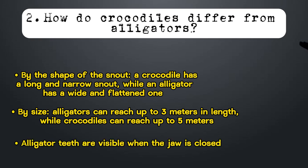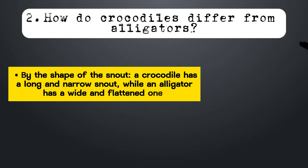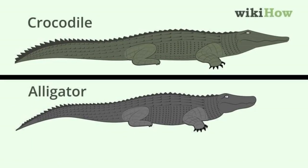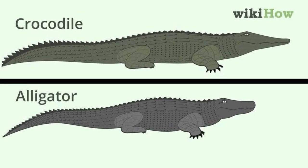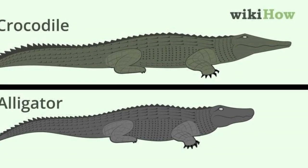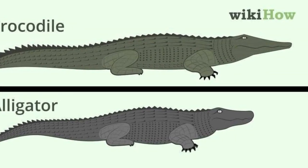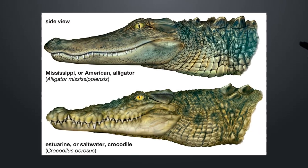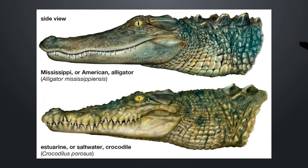Alligator teeth are visible when the jaw is closed. The difference between crocodiles and alligators is mainly physical. Alligators have a broader and rounder snout with webbed hind feet, while crocodiles have a more wedge-shaped head. The most noticeable difference is in their teeth.